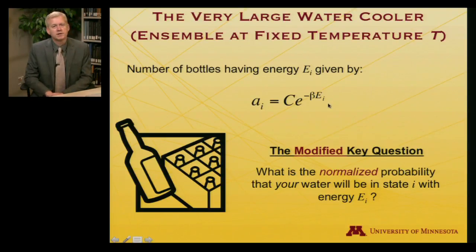And I'll ask a key question I asked previously, although I've got it in slightly modified form. What I want to know is, what is the normalized probability that the water I select randomly will be in state i having characteristic energy e sub i?